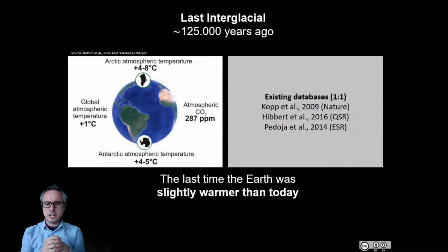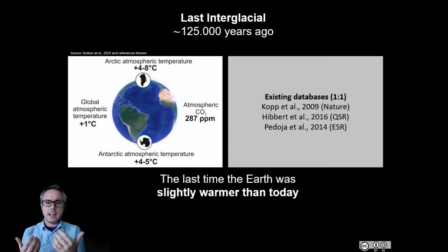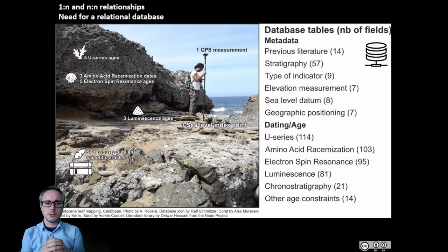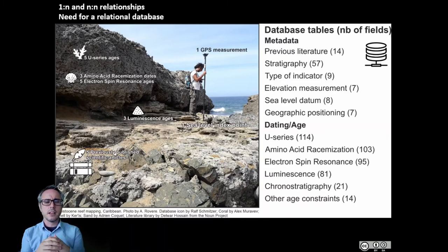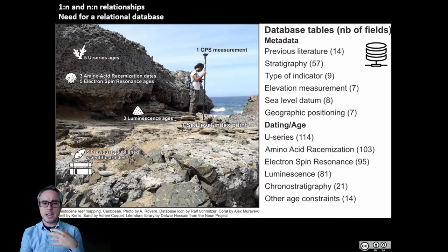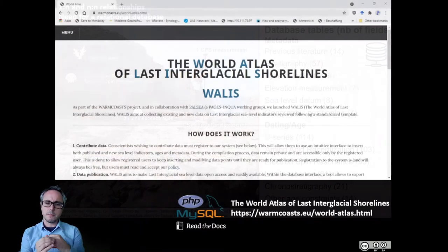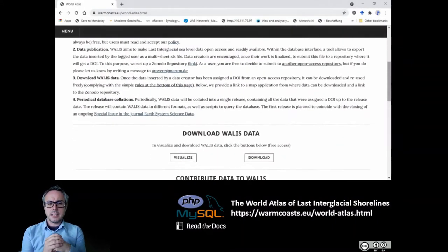For the last interglacial, when we started to think about how to streamline the creation of databases, we realized things are a little bit more difficult, because often a last interglacial site has several types of data associated to it and several different relationships — not only one-to-one, but one-to-many, for example between dated samples and GPS measurements or index points.